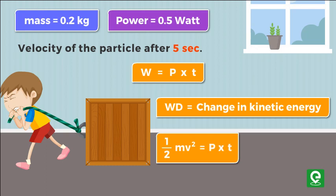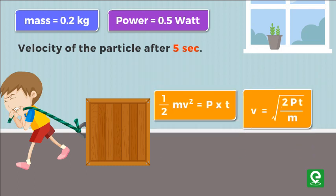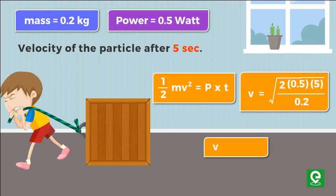Simplifying this, we get V equals square root of 2 times P times T divided by M. Substituting values of P, T, and M and solving gives us velocity equal to 5 meter per second.